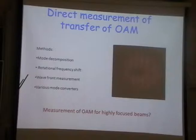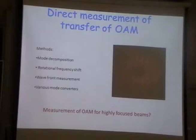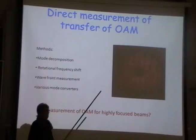There are different methods to measure orbital angular momentum: mode decomposition, rotational frequency shift, wavefront measurements, and various mode converters. Here is a modelling of how the Gauss-Laguerre beam — say LG03 — looks in three dimensions. It's very elongated in z. The artifacts visible are just computational interference fringes — it was supposed to be a nice smooth profile.